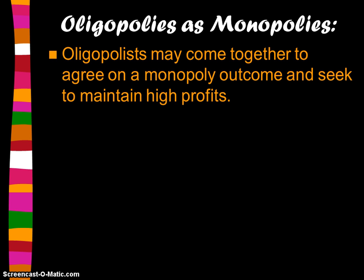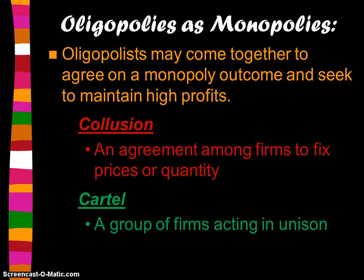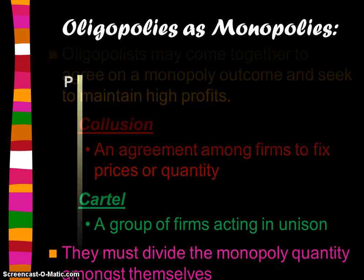If an oligopoly industry is operating as though it were a monopoly, the dominant firms come together — again, not legal in the United States — to agree on a monopoly outcome and seek to maintain high profits. They engage in collusion, which is an agreement among firms to fix prices or quantity. A cartel is a group of firms acting in unison — a formal collusion. These firms divide up the monopoly quantity of the market amongst themselves, analyze it as a monopoly, and each produces a portion of that profit-maximizing quantity and sells at the monopoly price.